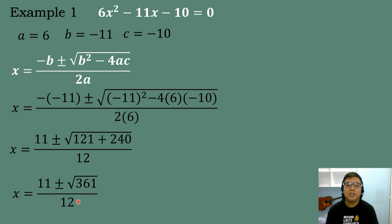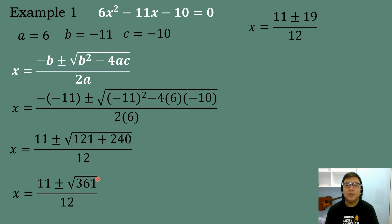We need the square root of 361. We think of a number that when multiplied by itself gives 361. That number is 19, because 19 times 19 equals 361. So X equals 11 plus or minus 19, all over 12.